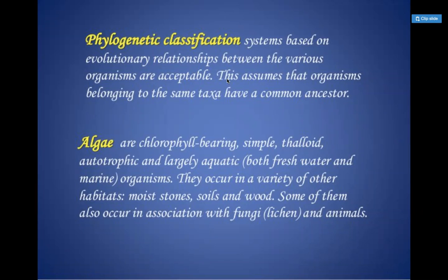We are discussing chapter 3 of class 11 Plant Kingdom, in which the first division is Thallophyta. In Thallophyta, algae are the examples. Algae are the simplest kind of plant in which no part is well differentiated — there is no leaf, no stem, no root. These are the most simplest plants. Algae have a structure known as thallus.